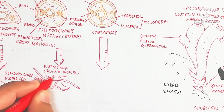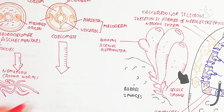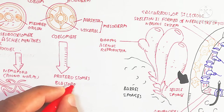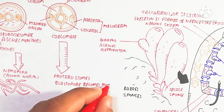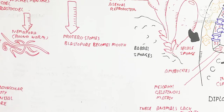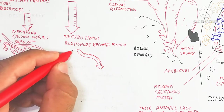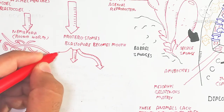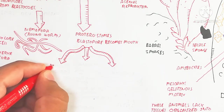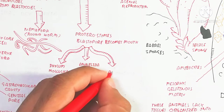The nematode comes from the classification of pseudocoelomates, which means a pseudocoelom is present as the body cavity. That phylum is Aschelminthes. The coelomate contains a coelom in the body cavity, and the coelom works as blood. The protostome contains a blastopore that becomes a mouth, while in deuterostome the blastopore becomes an anus — these are opposite.